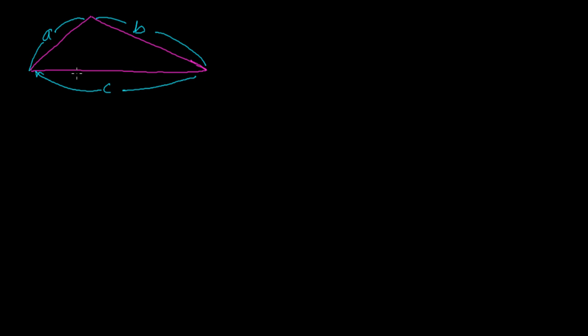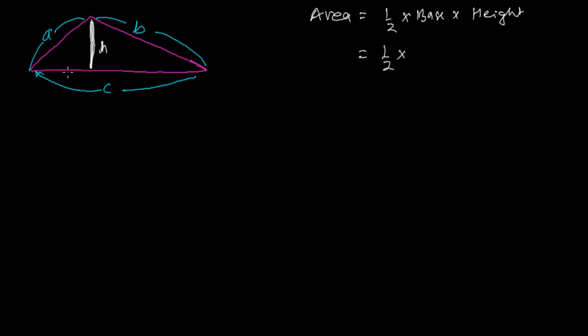Let's say we have a triangle where 'a' is the first side length, 'b' is the second side length, and 'c' is the third side length. Just for the purpose of derivation, we'll take a height 'h'. The classical method to find the area is half times base times height, which is one-half times c times h.